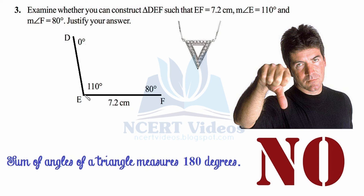At E, match the horizontal zero-degree line with EF and mark 110 degrees. At F, 80 degrees is constructed, making a line segment in that direction. What would angle D be in this case? It would need to be zero degrees, which is not possible. The two given angles already add up to 190 degrees, which exceeds 180 degrees — the total all angles in any triangle must equal.